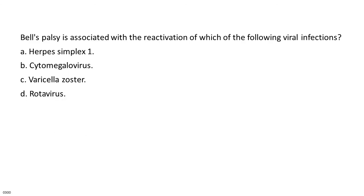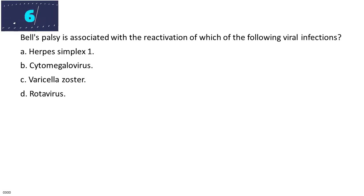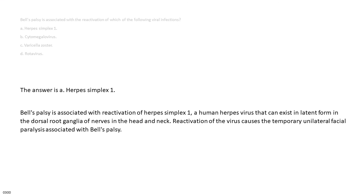Bell's palsy is associated with a reactivation of which of the following viral infections? A. Herpes simplex 1. B. Cytomegalovirus. C. Varicella zoster. D. Rotavirus. The answer is A. Herpes simplex 1. Bell's palsy is associated with reactivation of herpes simplex 1, a human herpes virus that can exist in latent form in the dorsal root ganglia of nerves in the head and neck. Reactivation of the virus causes the temporary unilateral facial paralysis associated with Bell's palsy.